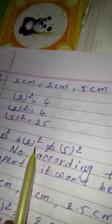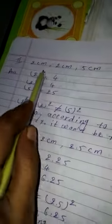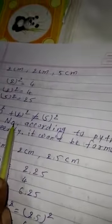Now, 2 square and 2 square means 4 plus 4 is equal to 8. But here, 5 square means 25, so it is not equal. So, with the help of this side's measurement, right angle cannot be formed.